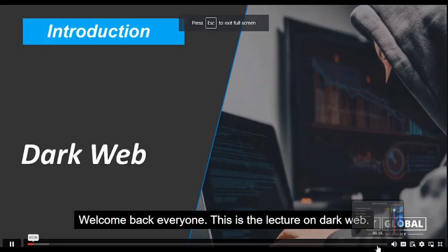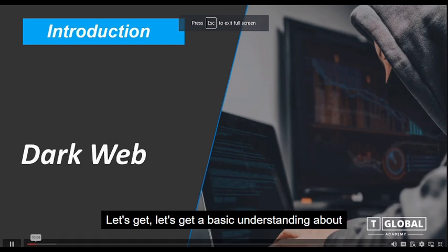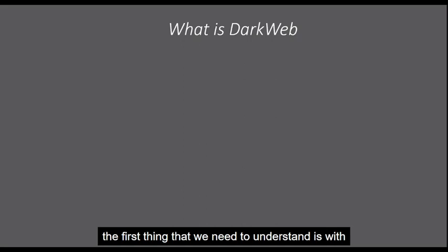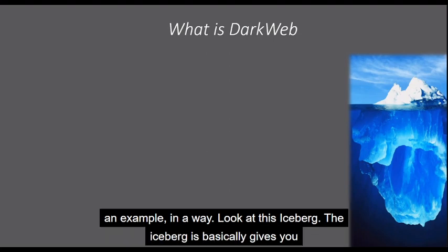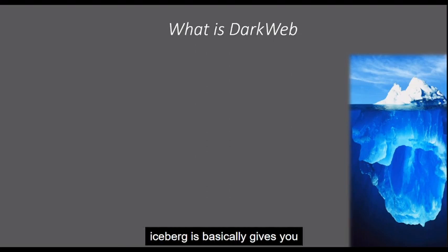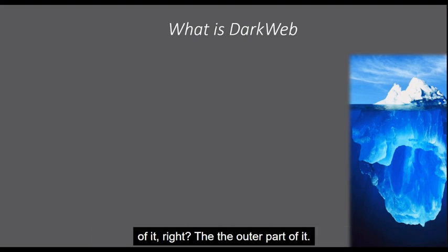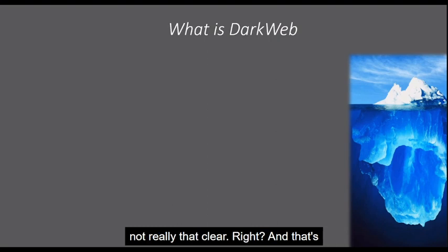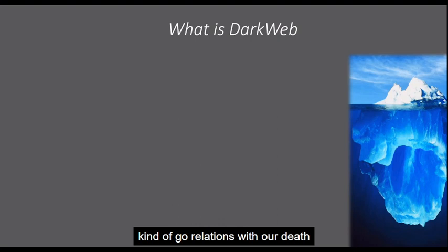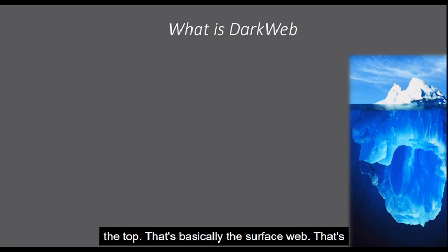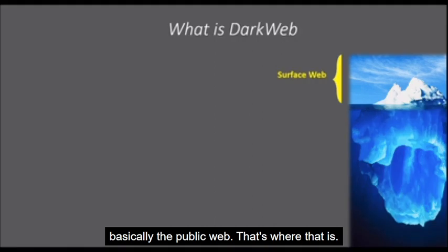Welcome back everyone. This is the lecture on dark web. Let's get a basic understanding about what dark web is. The first thing we need to understand is with an example — look at this iceberg. The iceberg gives you a very clear idea. When you look at the iceberg, you can only see the tip of it, the outer part. There's something inside that's not really clear, and that's how we can draw an analogy to the dark web. The part you see on top is basically the surface — that's the public web.